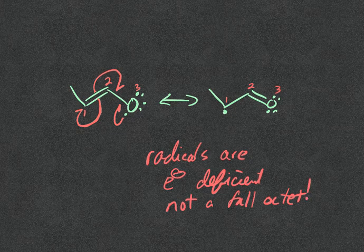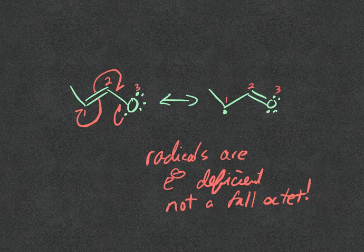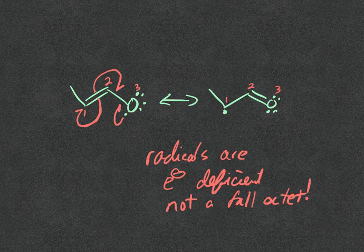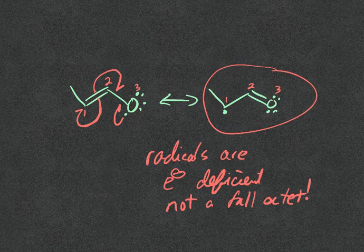We can treat them kind of like carbocations. Because of that, would you rather have a radical on oxygen or carbon? You'd rather have the carbon having it, so that's why this is the more stable radical.